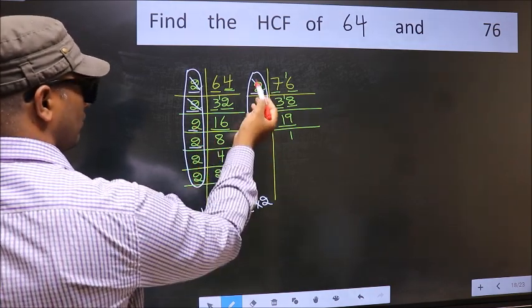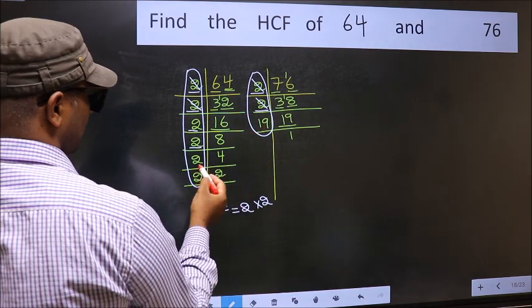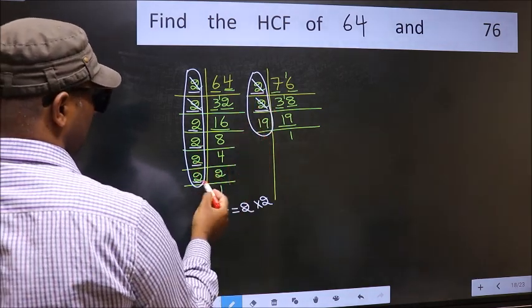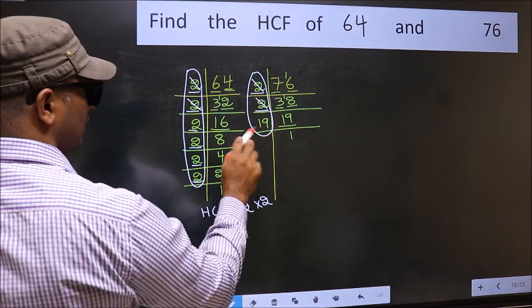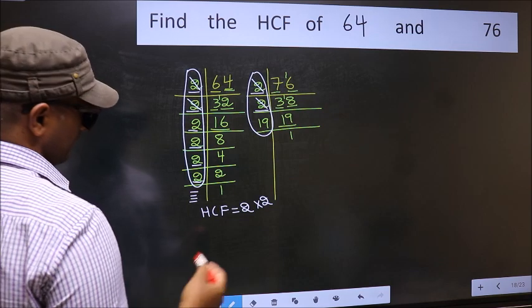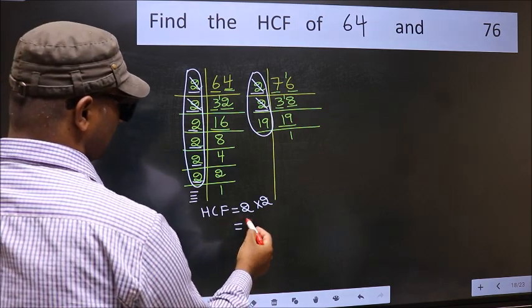Next number 2. Do we have 2 here? No. Next number 2. Do we have 2 here? No. No more numbers have been left out. So our HCF is 2 into 2. 4 is our HCF.